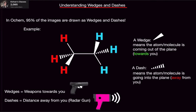Welcome back. In this video, we're going to go over understanding wedges and dashes. Before you click away and go to Khan Academy or Organic Chemistry Tutor, let me tell you — this video has mnemonics. Something that they don't do. In OCHEM, 95% of the images are drawn as wedges and dashes.